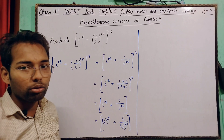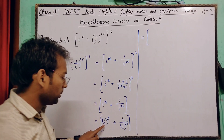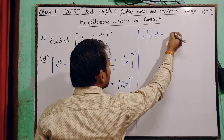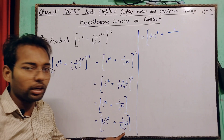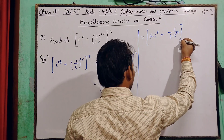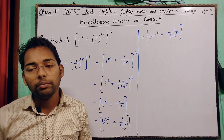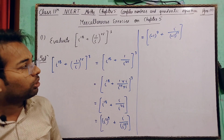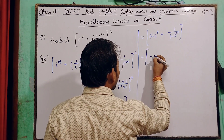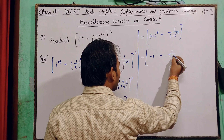i² का value minus 1 होता है। तो i² की जगह minus 1 रखेंगे: (-1)^9 + i / (-1)^13। Odd power होने पर negative number negative रहता है, इसलिए (-1)^9 = -1 और (-1)^13 = -1। So we get: -1 + i / -1, which gives -1 - i.